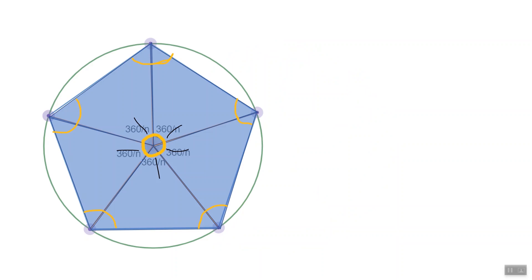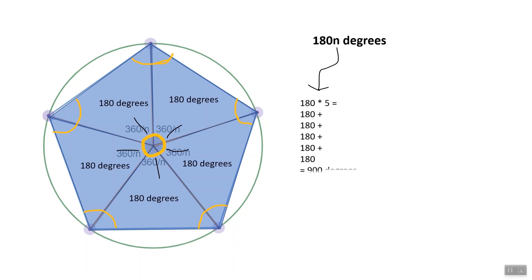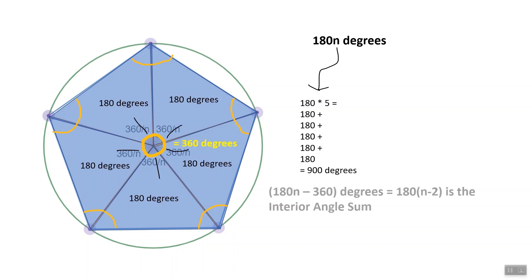We accept that a triangle has an interior angle sum of 180 degrees. Adding up the interior angle sums of all triangles in our polygon gives a total of 180 times n degrees. However, this count includes the vertex angles of our isosceles triangles, which are not part of the interior angle sum of the polygon. Those vertex angles sum to 360 degrees, so we over-count by 360 degrees. We fix this by subtracting 360 from 180n, giving an interior angle sum of 180n − 360, or 180 times (n − 2).